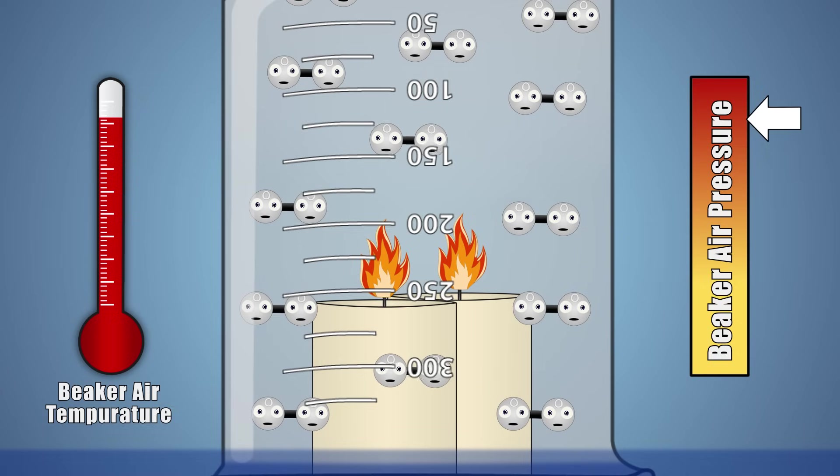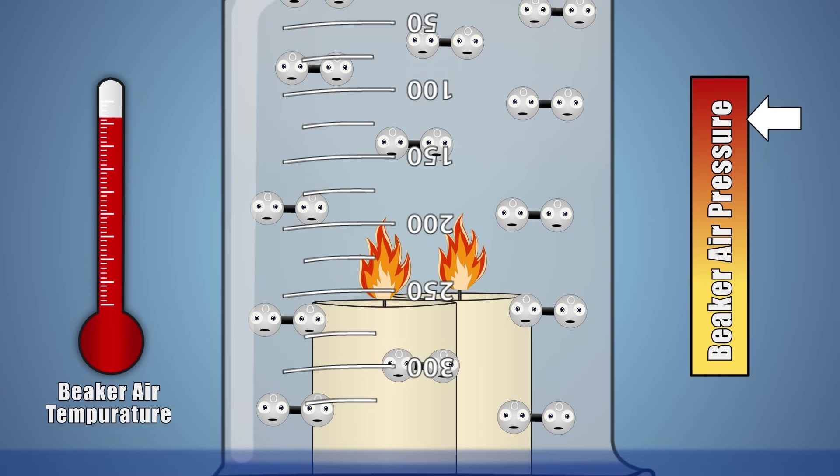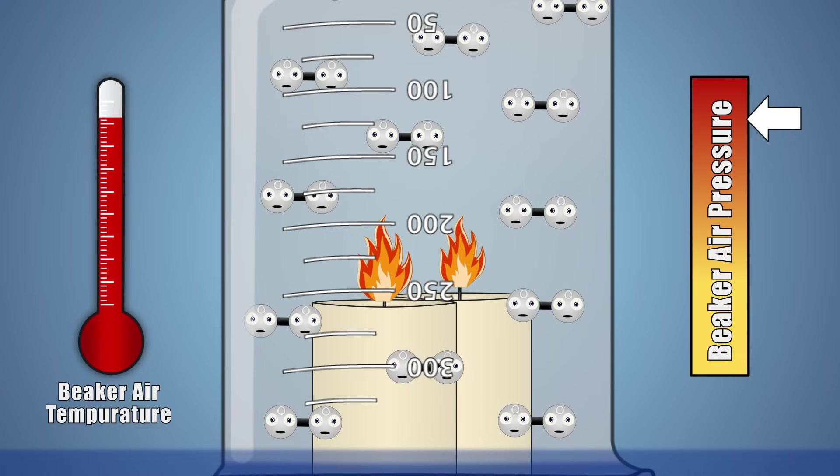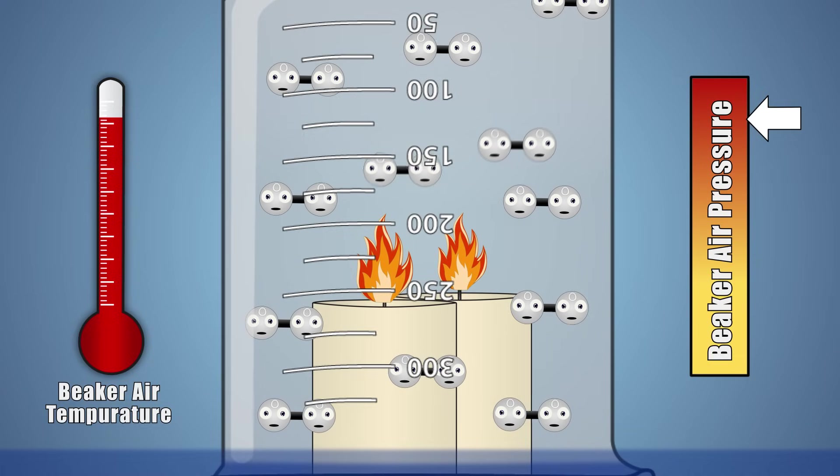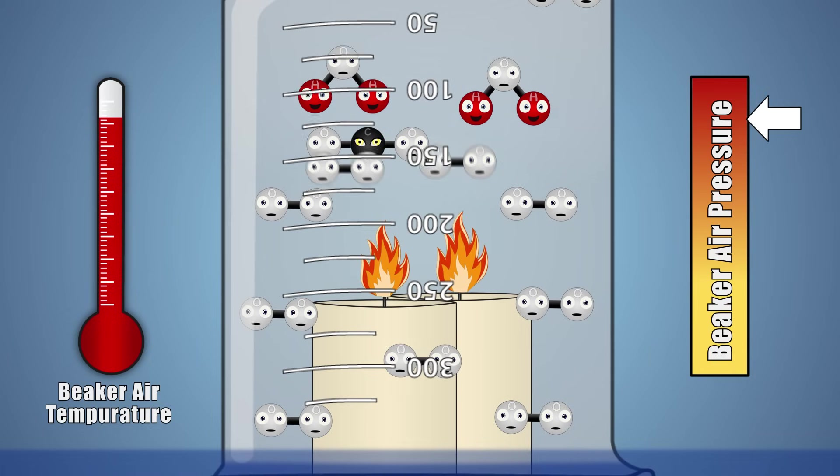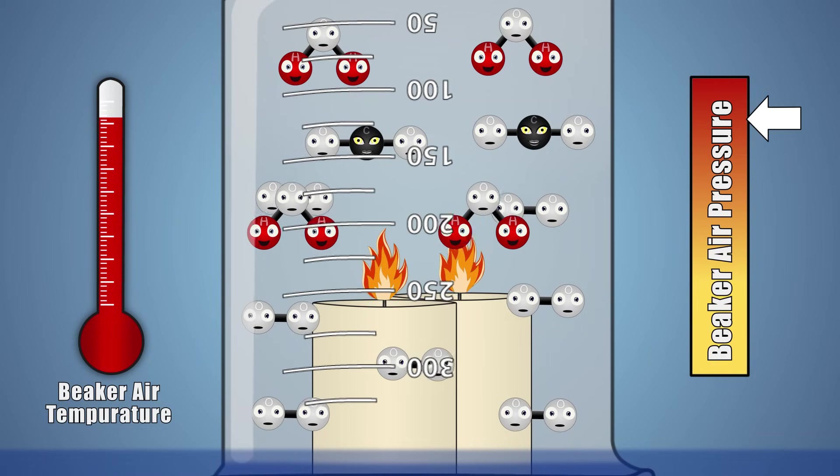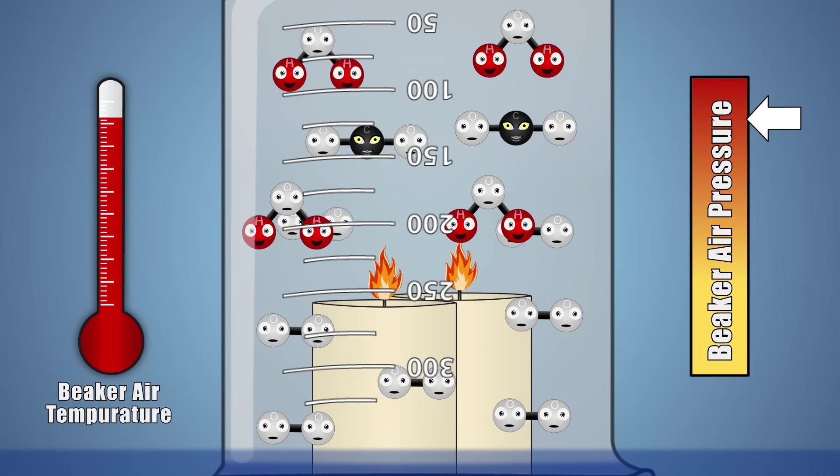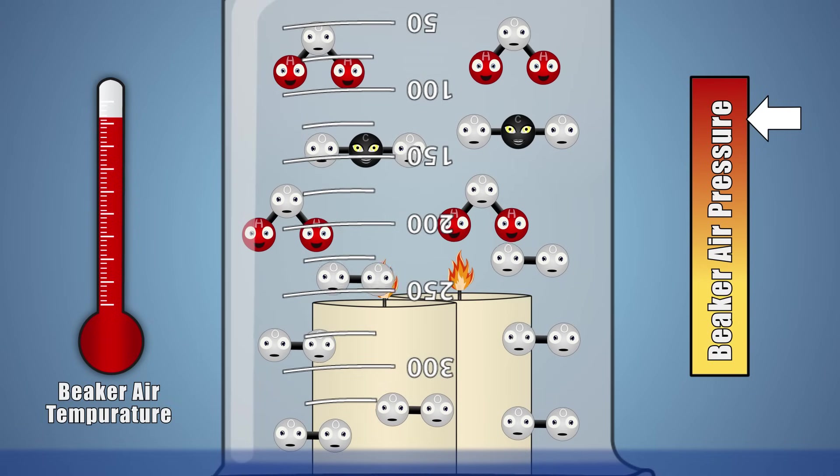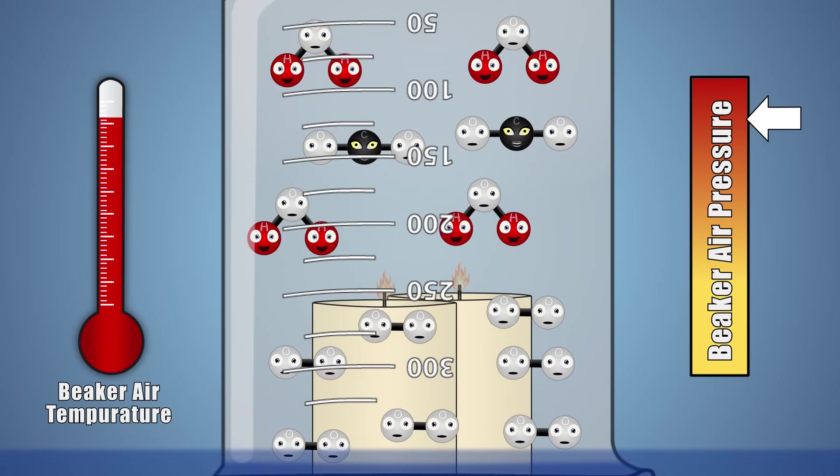As the candle flames burn, they use some of the oxygen contained in the beaker for combustion. The products of this reaction are carbon dioxide gas and water vapor. As more and more hot carbon dioxide gases and water vapor are produced, they fill up the top of our beaker, forcing the oxygen in our beaker that the candles need to burn lower and lower until the candles are extinguished.